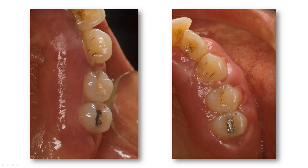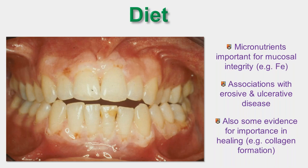This lady suffers from C1 esterase inhibitor deficiency or angioedema — deficient in the inhibitor that switches off complement activation. Every time she gets stressed, her gingival tissues swell up with fluid. These are very boggy and just move when you try to operate. I had to operate on her 47 times over 27 years; eventually we lost her teeth but managed to keep them for nearly 30 years. Management should be medical not surgical — but in her case I had to do surgery.